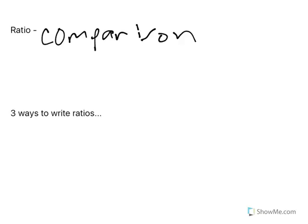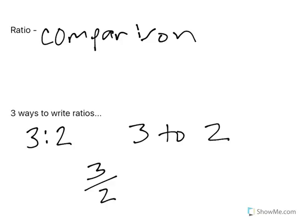Now there's three ways to write them. We can write them with the colon, with the word to, or generally as a fraction. I'm a huge fan of writing ratios as fractions, but each one of these things has a place in math. If it says write a ratio, you really can get away with writing them in any way.